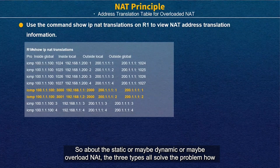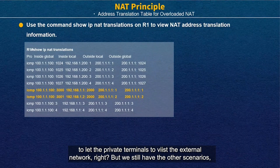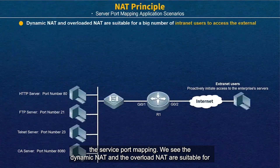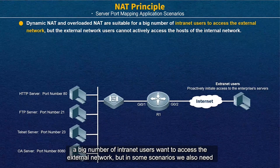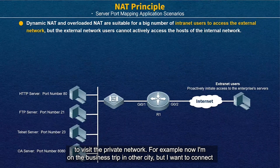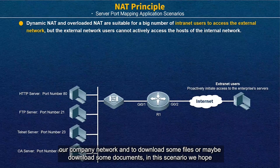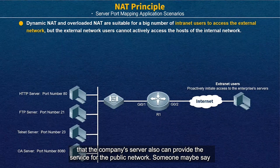Static, dynamic, and overload NAT are three types that solve the problem of letting private terminals access the external network. But there is another scenario: service port mapping. Dynamic NAT and overload NAT are suitable when many internal users want to access the external network. However, in some scenarios, we also need external users to be able to visit the private network — for example, when you want to connect to your company and download files or documents remotely.